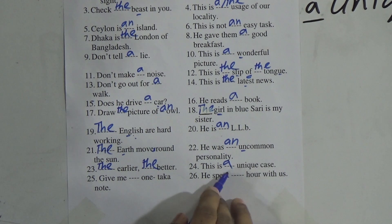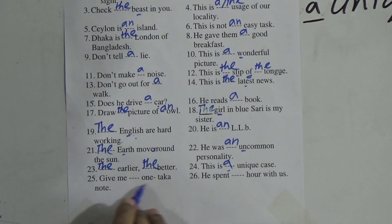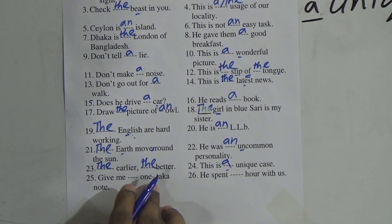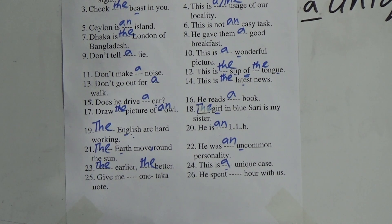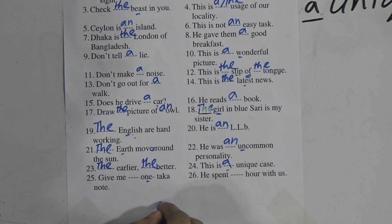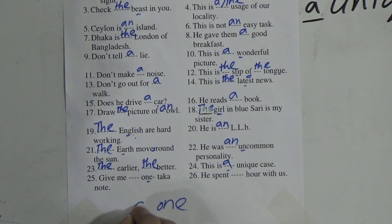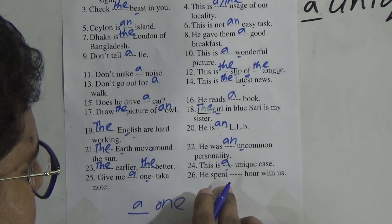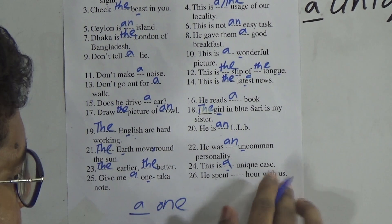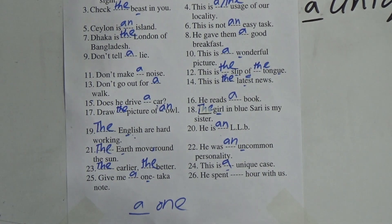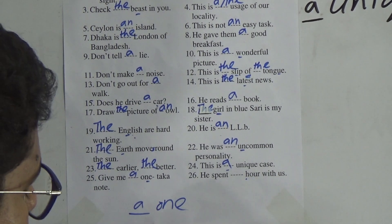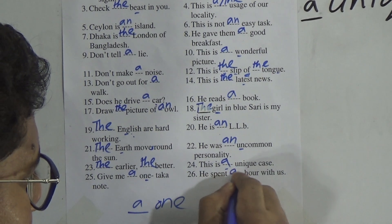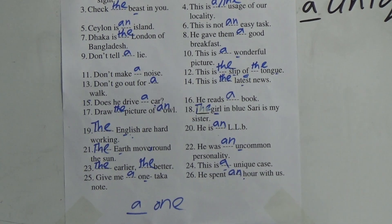Number 24: This is a unique case — we find 'unique', starting with 'u' pronounced as a consonant 'y' sound, so before it we use 'a' not 'an'. Give me a one-target note — before 'one' we always use 'a'. He spent an hour with us — 'hour': we are not pronouncing the 'H', we pronounce it as 'our', so 'H' is silent and we use 'an'.